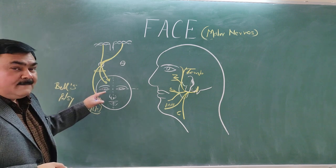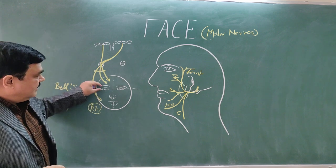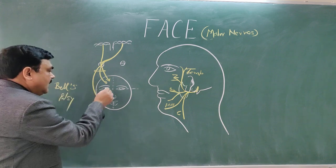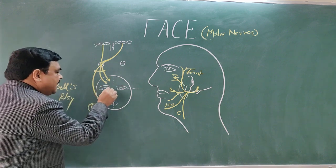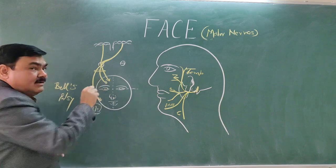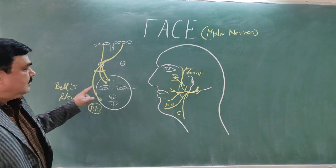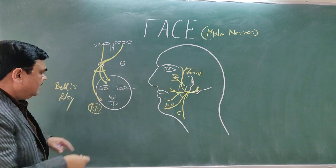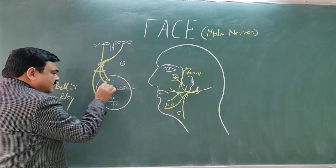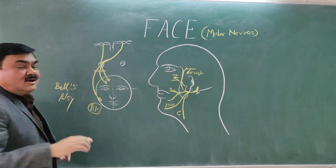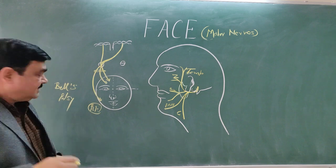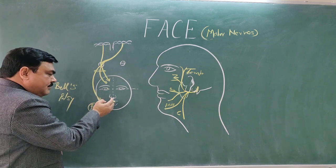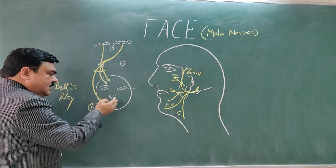The patient cannot blink the eye; they cannot close their eyes — the eyes are always open due to imbalance of the muscles. The patient cannot fold the skin. The transverse wrinkles are absent, and if they try, the face deviates towards the normal side.